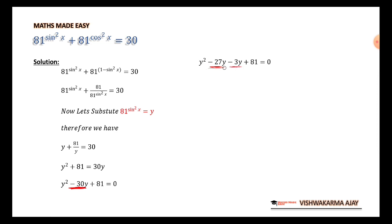y raised to 2 minus 27y minus 3y plus 81. Now, taking y common from the first part and minus 3 common from the second part. We have y(y minus 27) minus 3(y minus 27) is equal to 0. Now, I can take y minus 27 common from both the terms. So, inside the bracket, y minus 3 is only left. y minus 3 and y minus 27 is equal to 0. Therefore, the value of y we have here is y is equal to 3 and y is equal to 27.